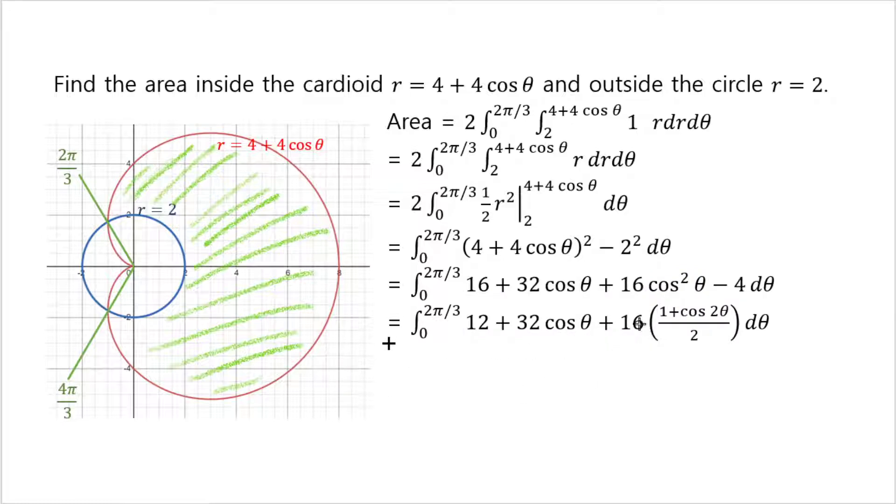Then furthermore, I can simplify. 16 divided by 2 gives you 8. 8 times 1 plus 12 gives you 20, and then you also have 8 times cosine 2 theta. Then you integrate each one of them. That's not so hard. 20 integrates to 20 theta, cosine integrates to sine. Cosine 2 theta integrates to 1 half sine 2 theta, but 1 half times 8 is 4, that's why I get this 4.